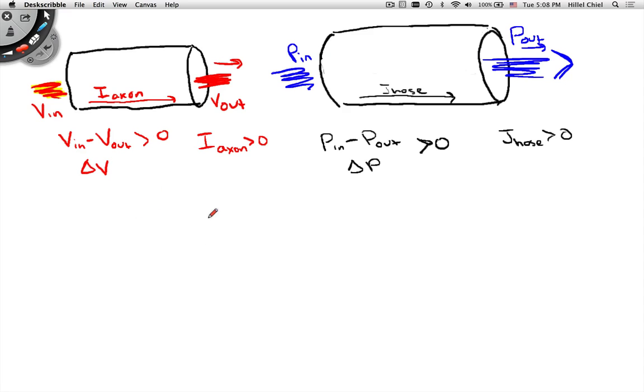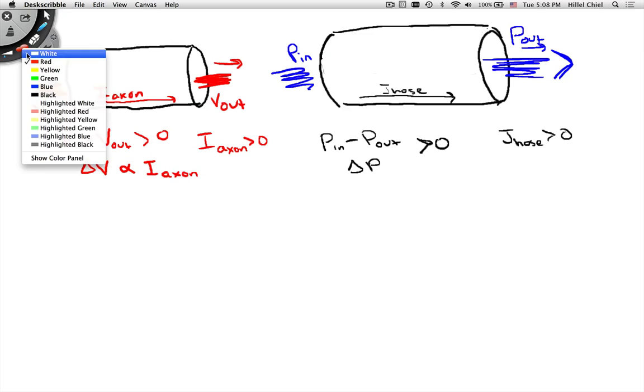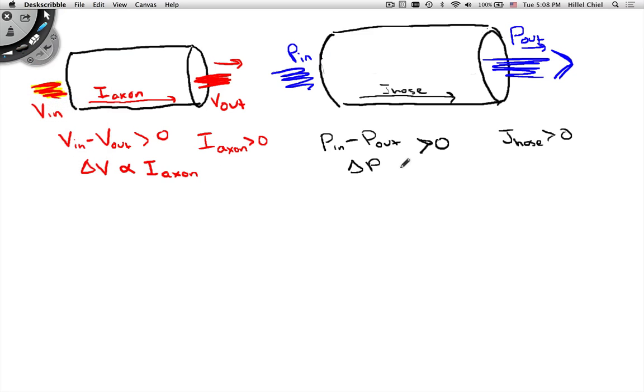So let's generalize the first step. We can say that our delta V is proportional to our I_axon. Excellent. And we can say our delta P is proportional to our J_hose. Excellent.